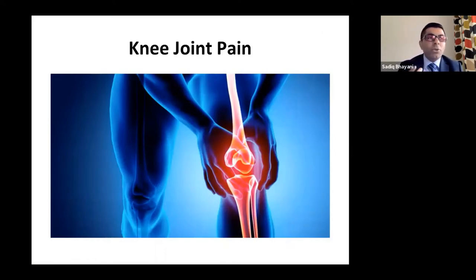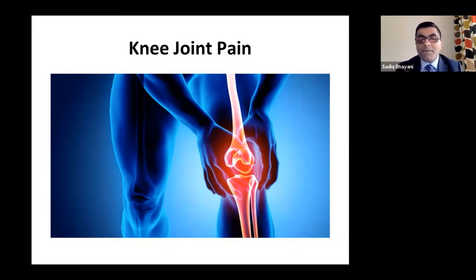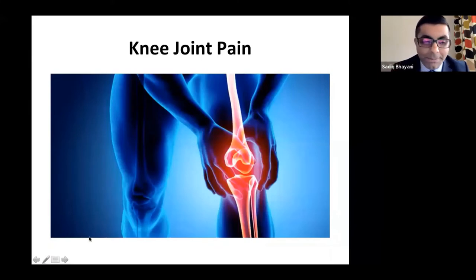The new thing in shoulder joint management: don't just block the suprascapular nerve. You have other nerves to target — axillary nerve, lower subscapular, and lateral pectoral nerve — and that's the only way to get better pain coverage. This is what's new in shoulder joint pain.